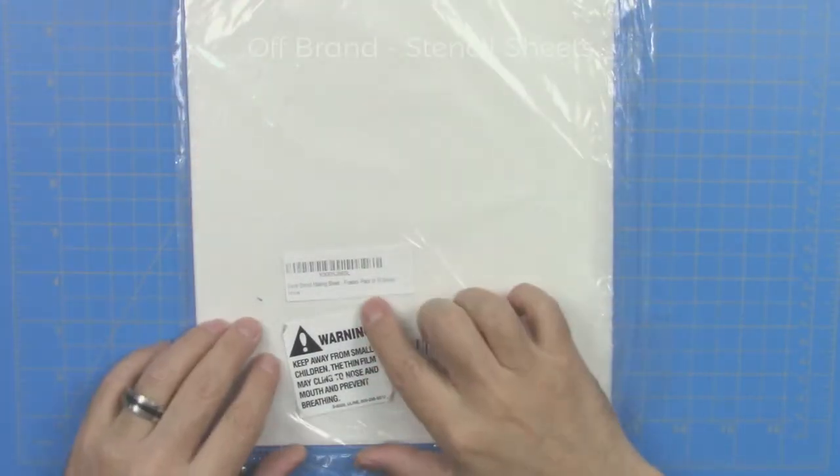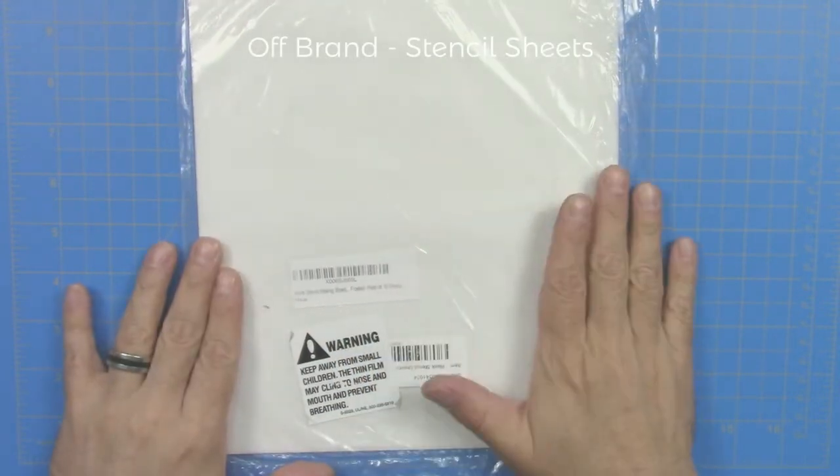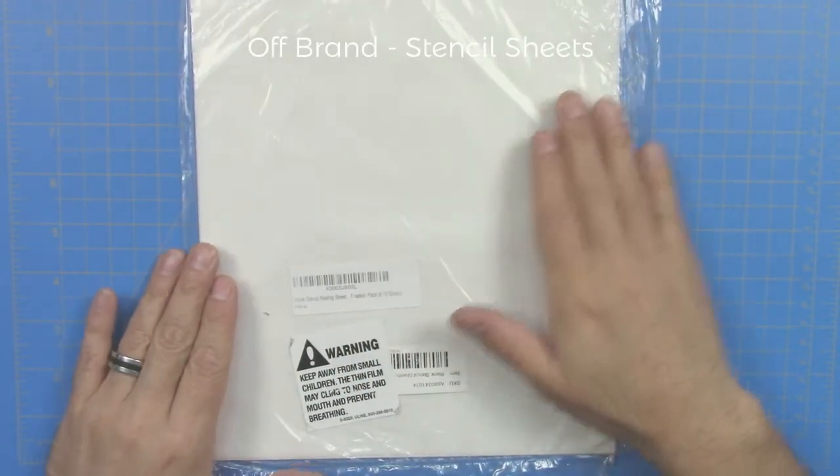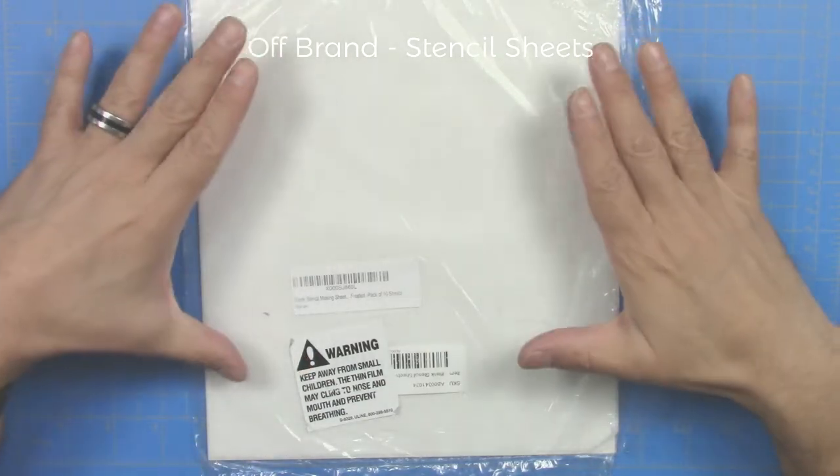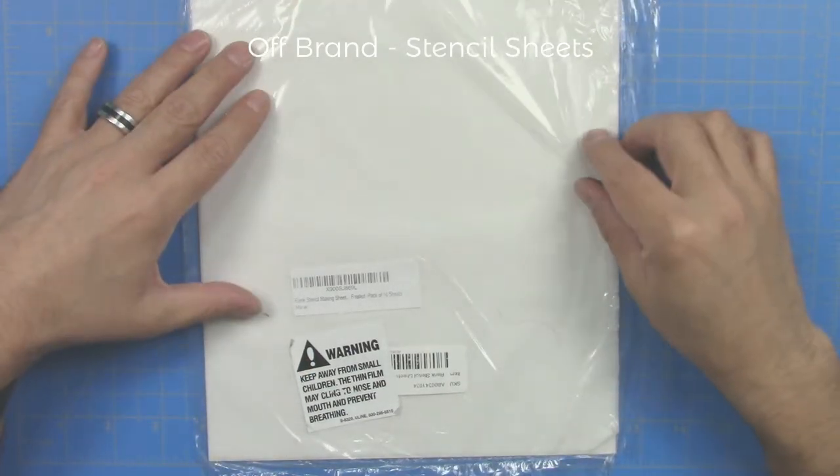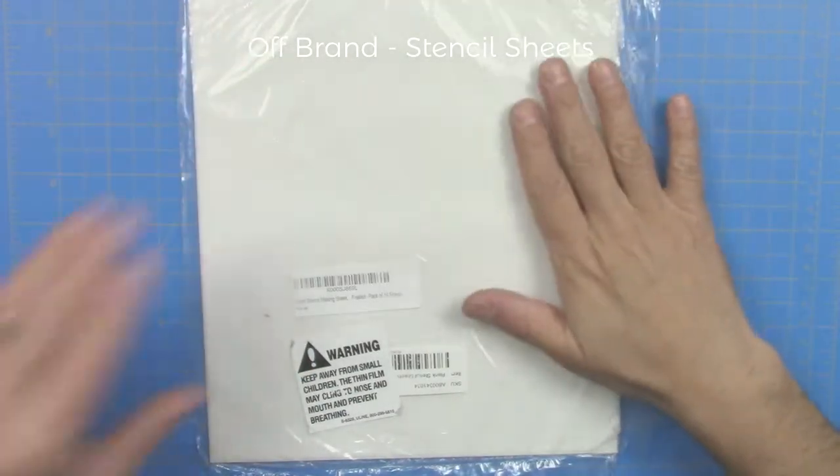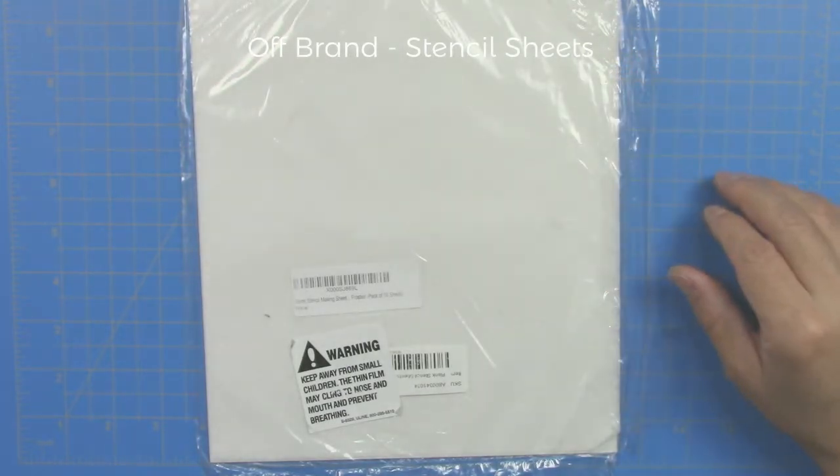The second brand I tested was the off-brand stencil sheets. They come in packs of 10 sheets of eight and a half by 11 inches. They are frosted on one side and shiny on the other side.